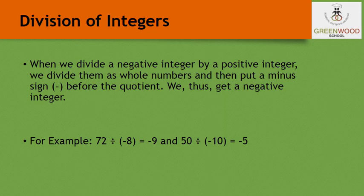Now we will study division of integers. When we divide a negative integer by a positive integer, we divide them as whole numbers and then put a minus sign before the quotient, giving a negative integer. For example, 72 divided by minus 8: since 72 divided by 8 is 9, the answer is minus 9. And 50 divided by minus 10: since 50 divided by 10 is 5, the answer is minus 5.